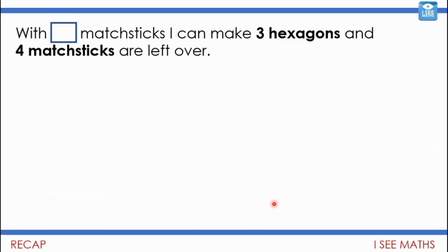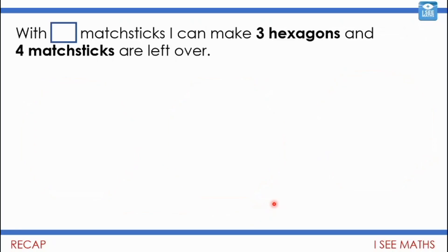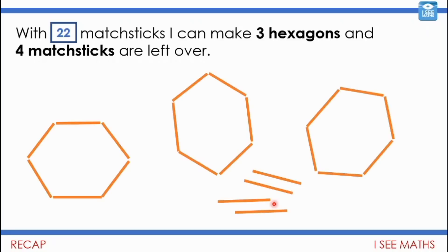Here's an extra challenge: how many matchsticks do I need to make three hexagons and have four matchsticks left over? Pause the video if you need to. Well, three hexagons with six matchsticks each — six times three is 18 — and then four left over, so 22 matchsticks in total.